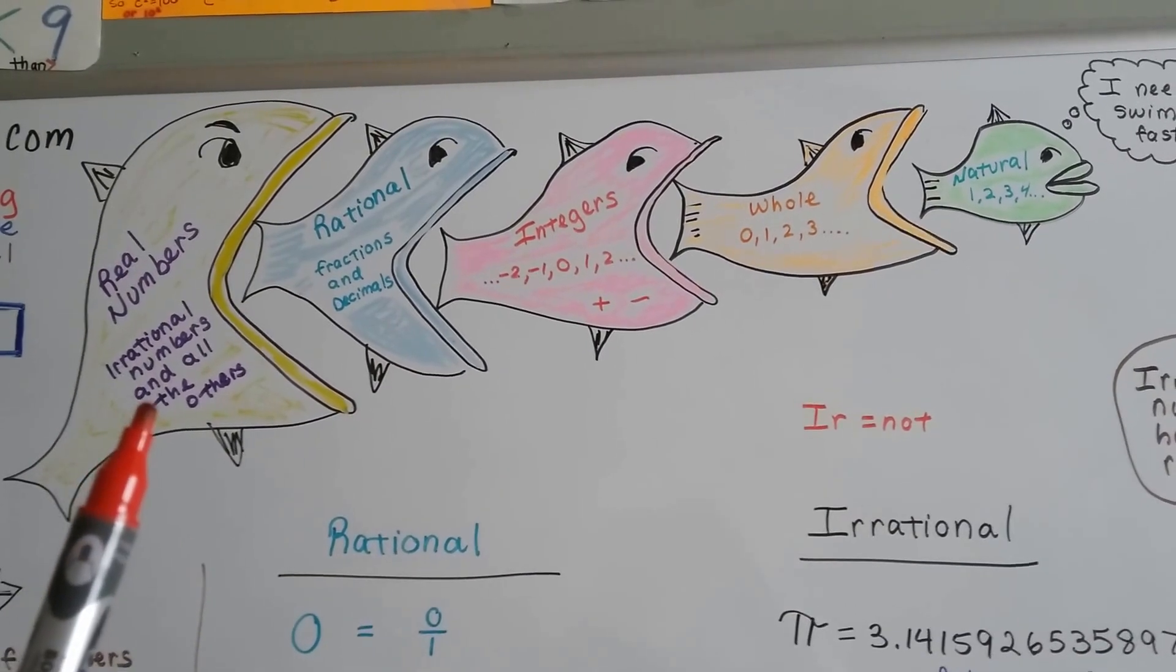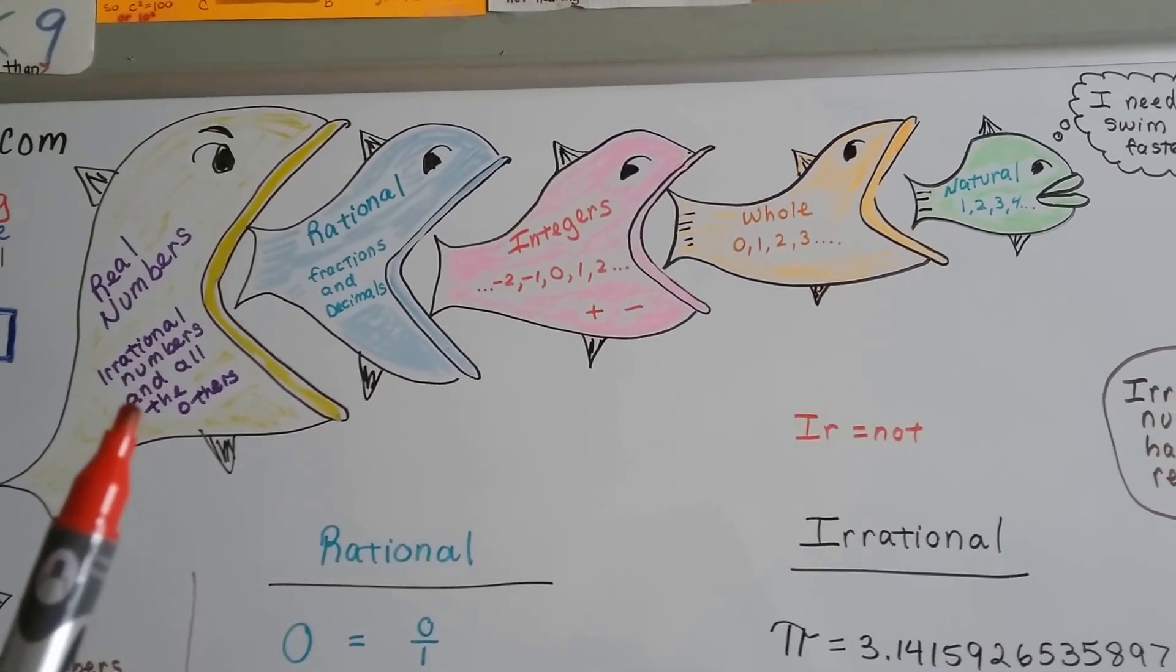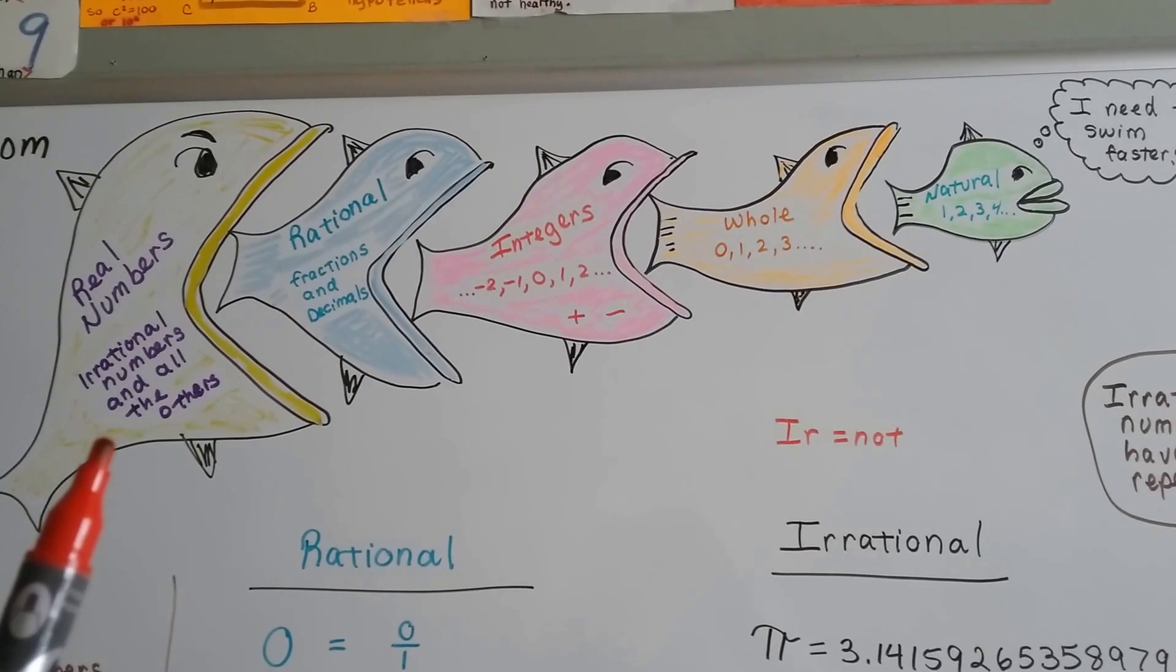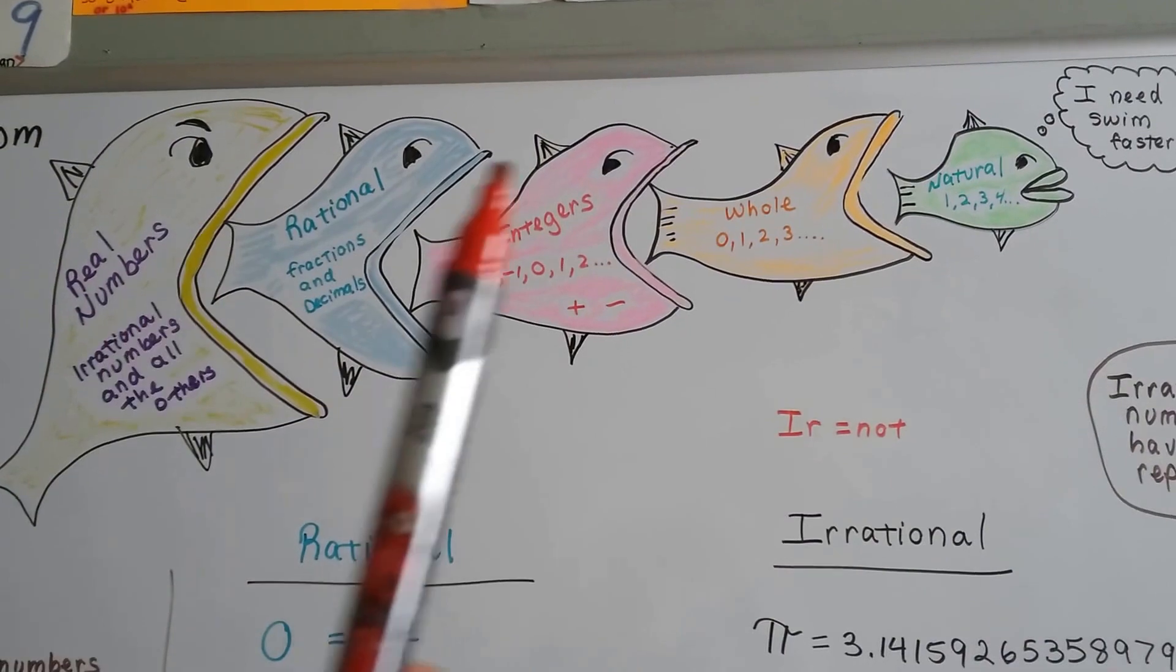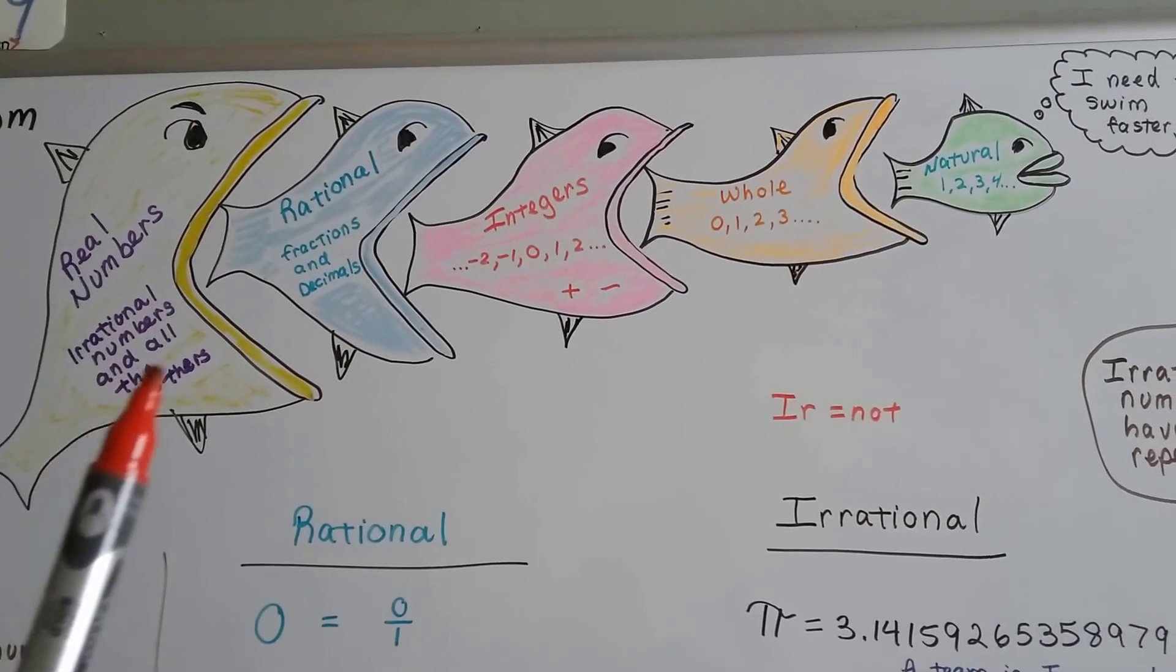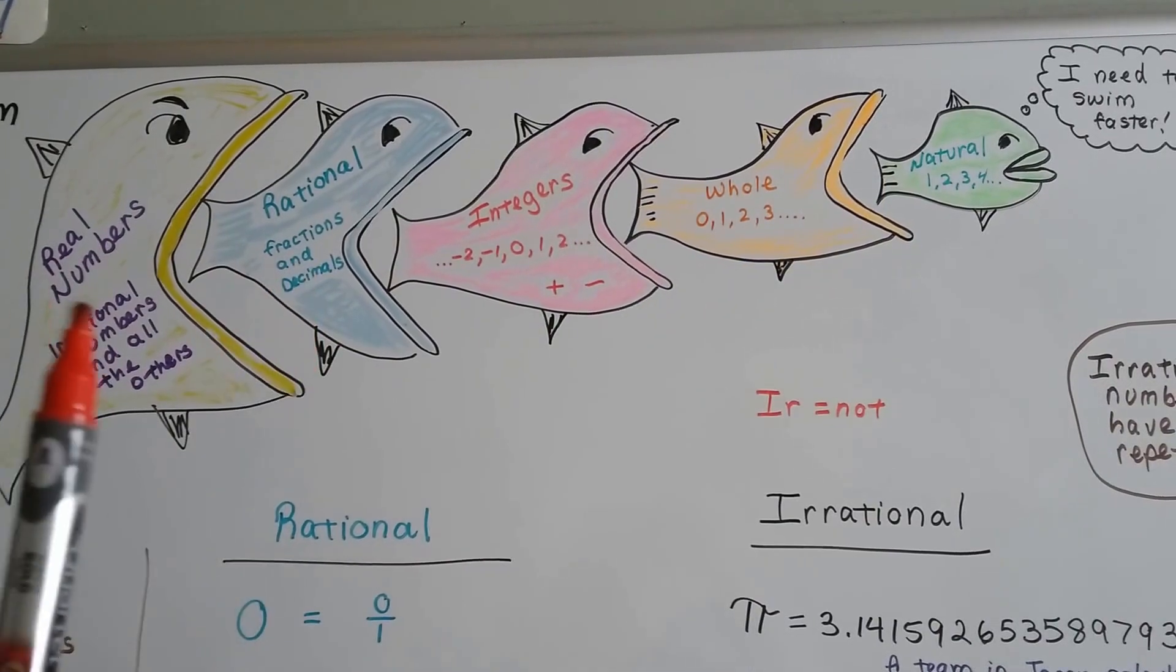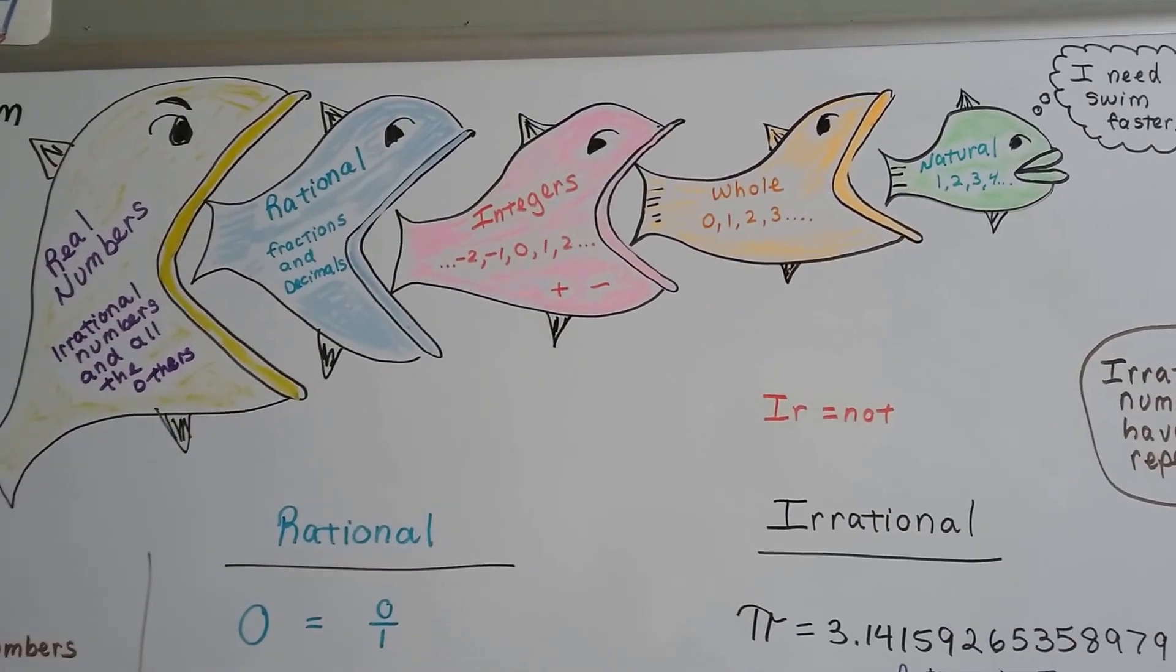Then we add irrational numbers—those that cannot be written as a fraction and don't repeat as decimals. Real numbers are all of them, including the irrational numbers. So these are all subsets of this bigger set of all the numbers.